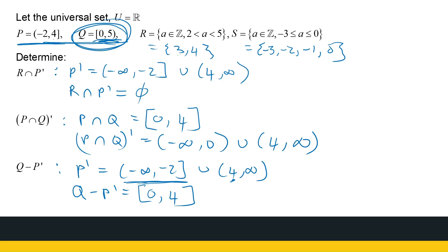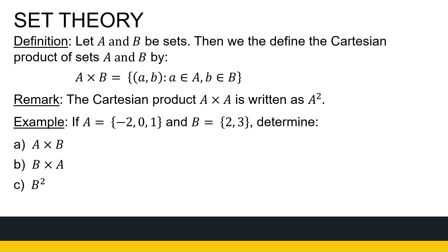No matter what sets you're given, you must be able to find union, intersection, complement, and difference — or any combination. One more operation to mention is the cross product, also called the Cartesian product of two sets. These sets cannot be empty. For two non-empty sets A and B, the Cartesian product is a set of ordered pairs where the first entry comes from the first set and the second entry from the second set — all possible combinations.